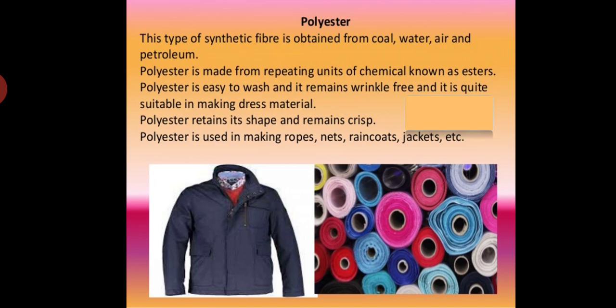Next is polyester. This type of synthetic fiber is obtained from coal, water, air, and petroleum. Polyester is made from repeating units of a chemical known as esters. As the name suggests, 'poly' means many and 'ester' means ester — so when many esters combine, polyester is formed.